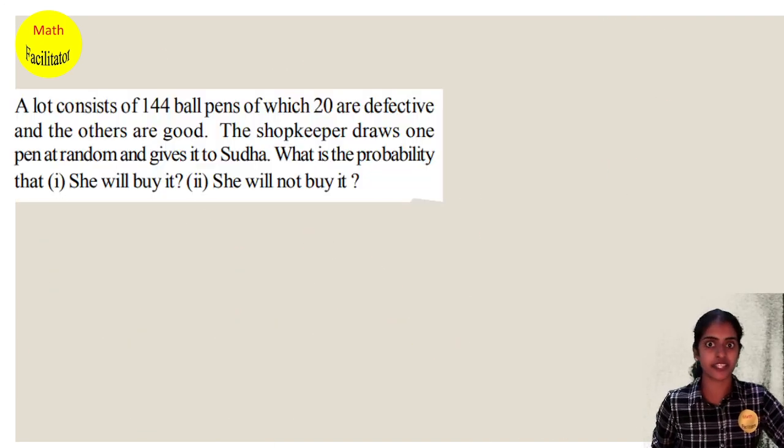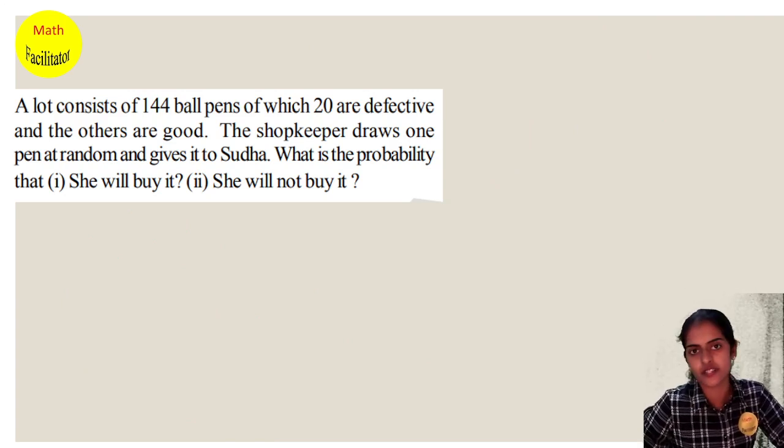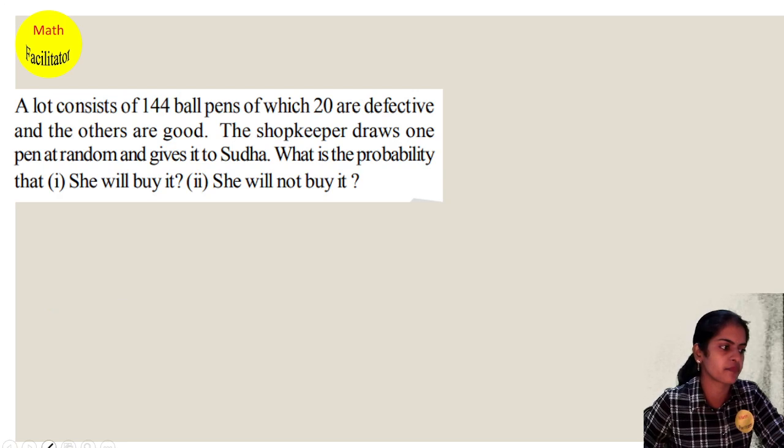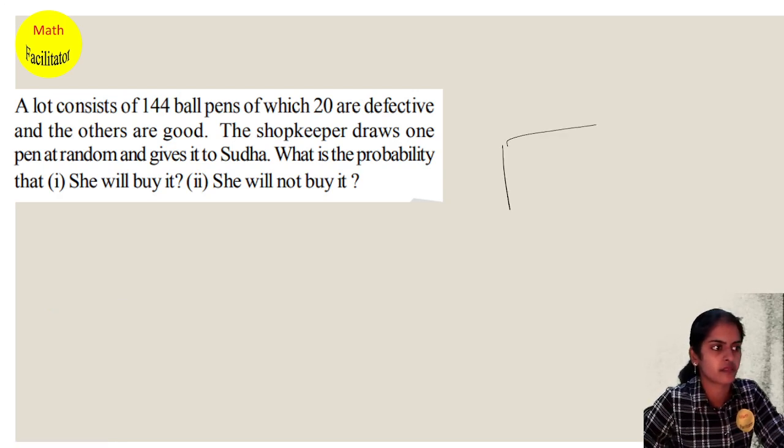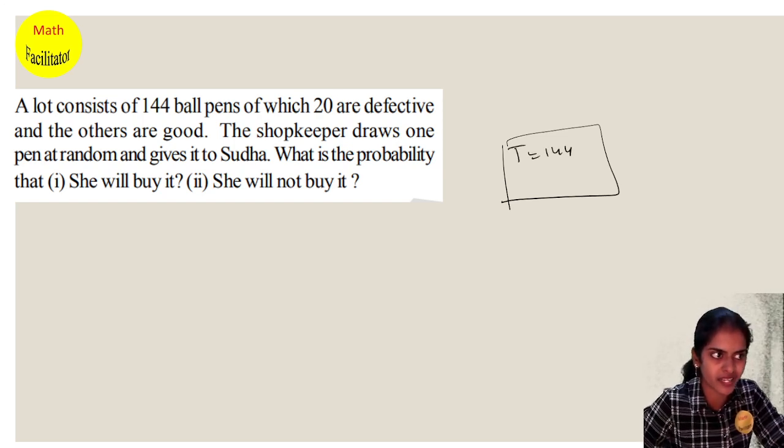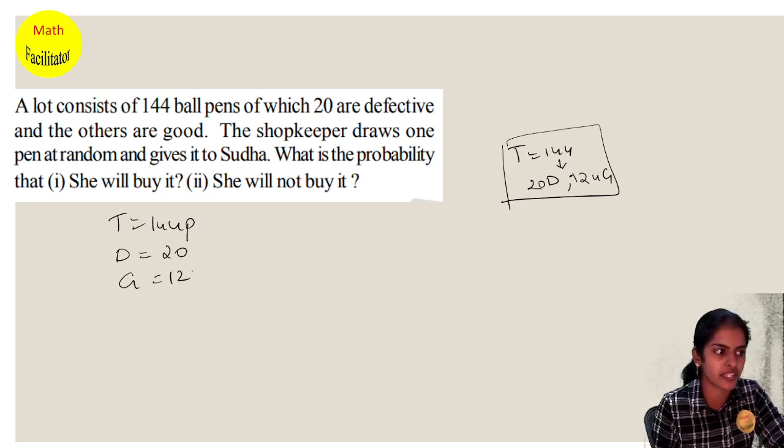Next question: A lot consists of 144 ball pens, of which 20 are defective and the others are good. How many good ones are there? 144 minus 20 equals 124 good ones. So total there are 144 pens, defective ones are 20, and good ones are 124.